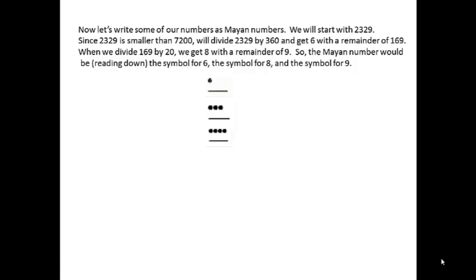We have 169 left over. We divide 169 by 20, we get eight. So the second place will be eight and we have nine left over. That's the number of ones. So reading down we see six in the third place, eight in the second place, and nine in the first place.